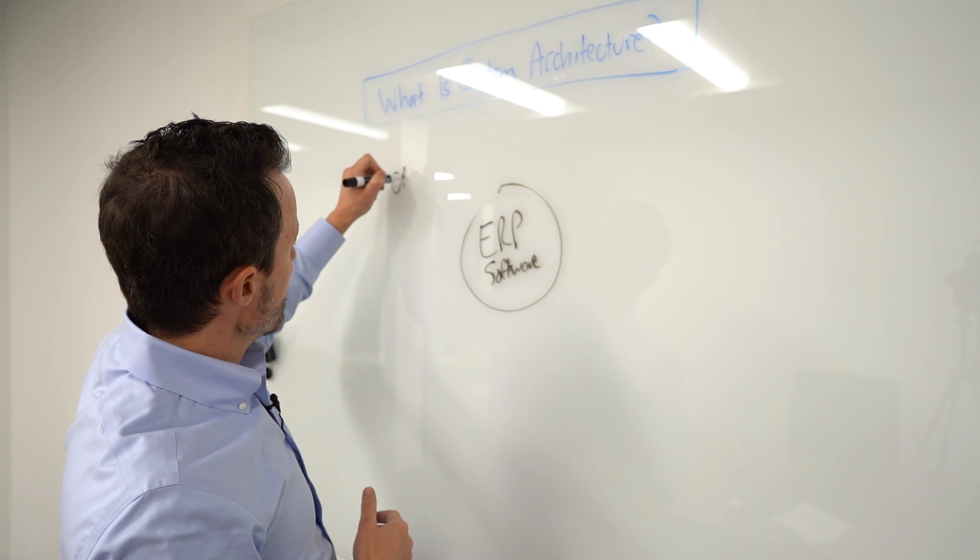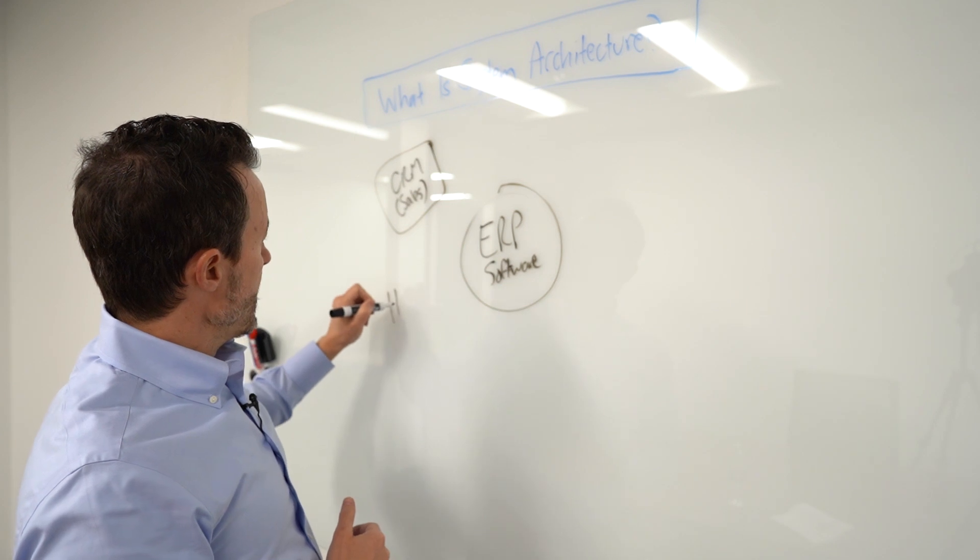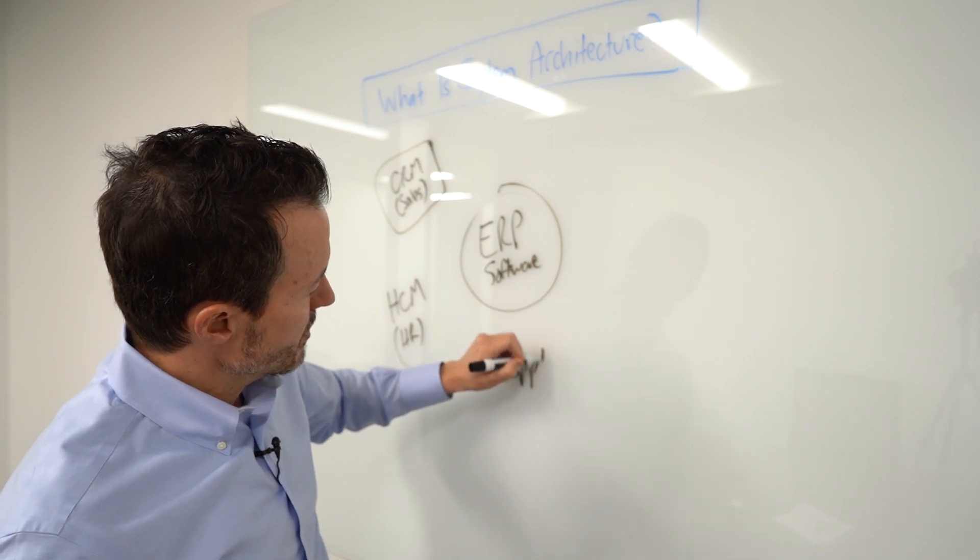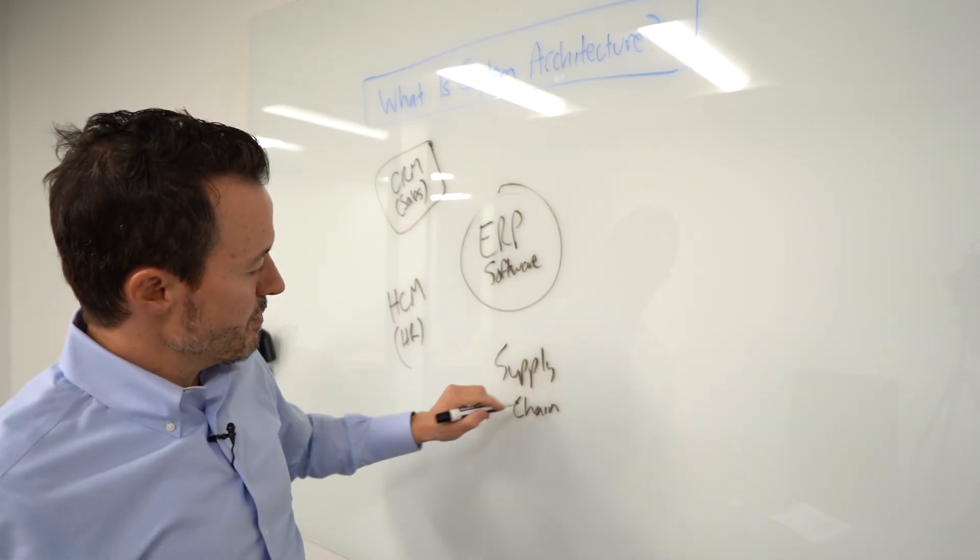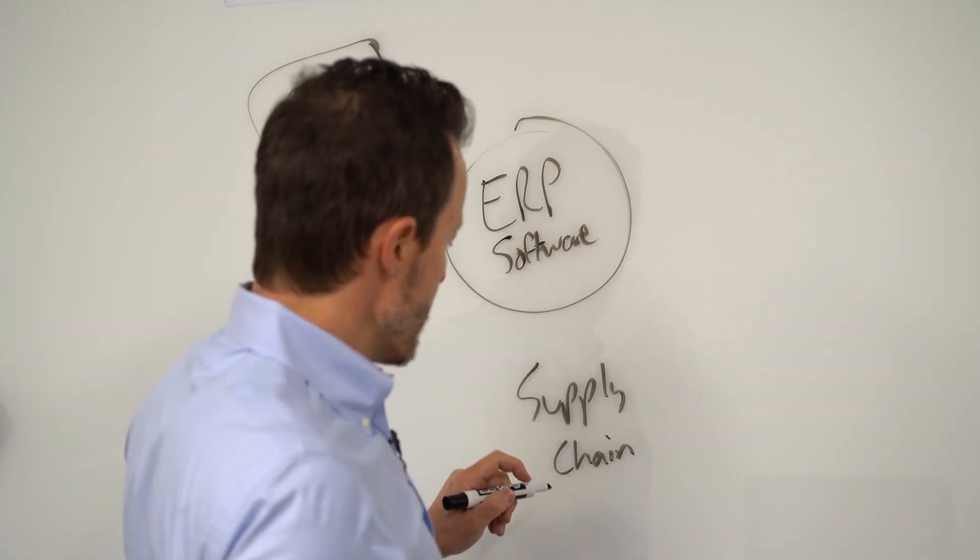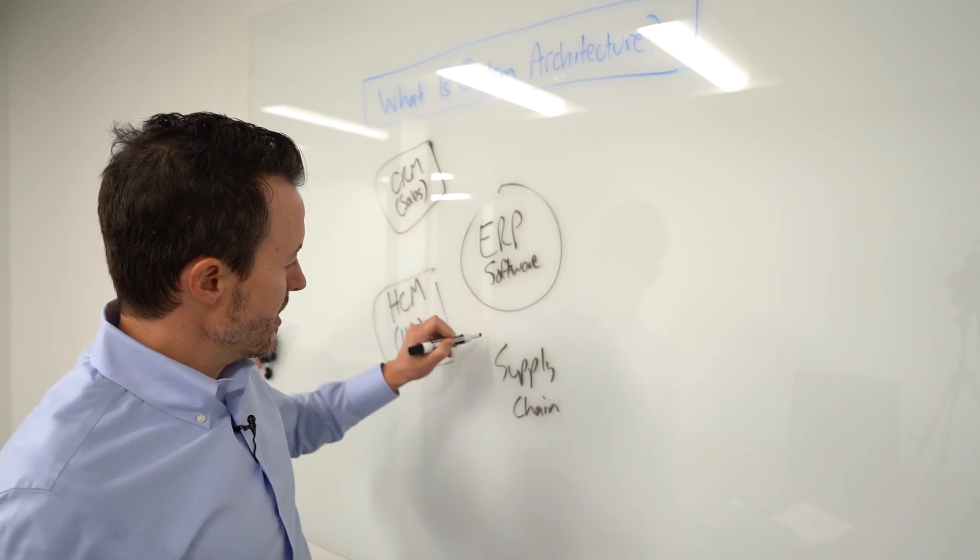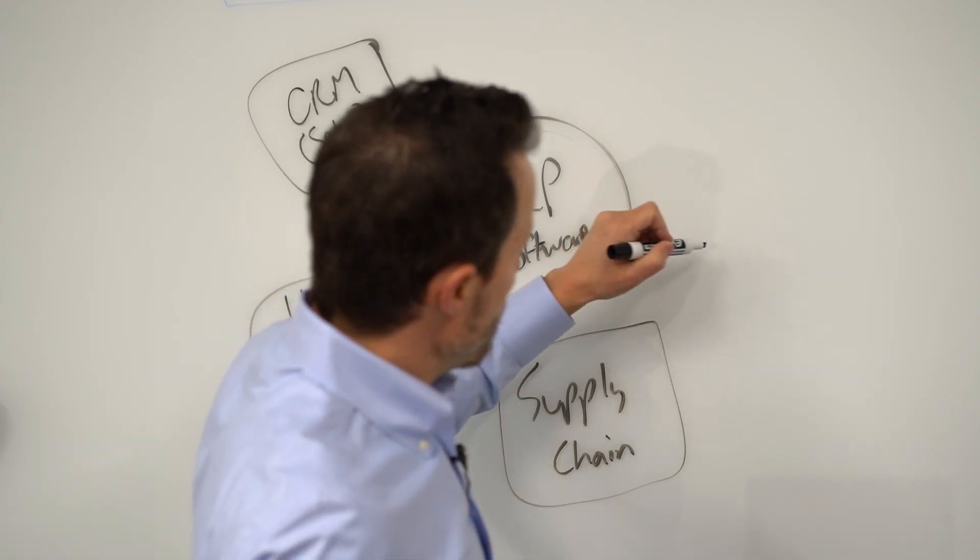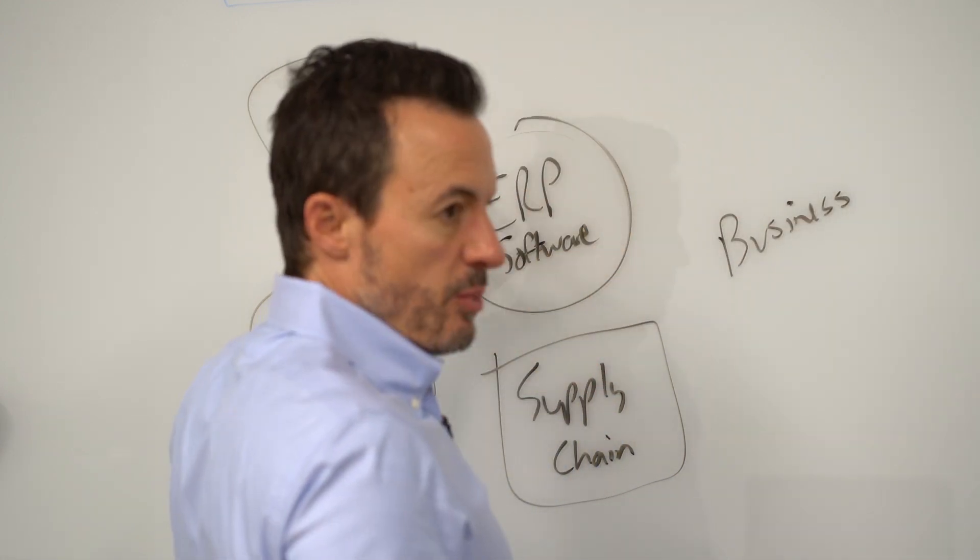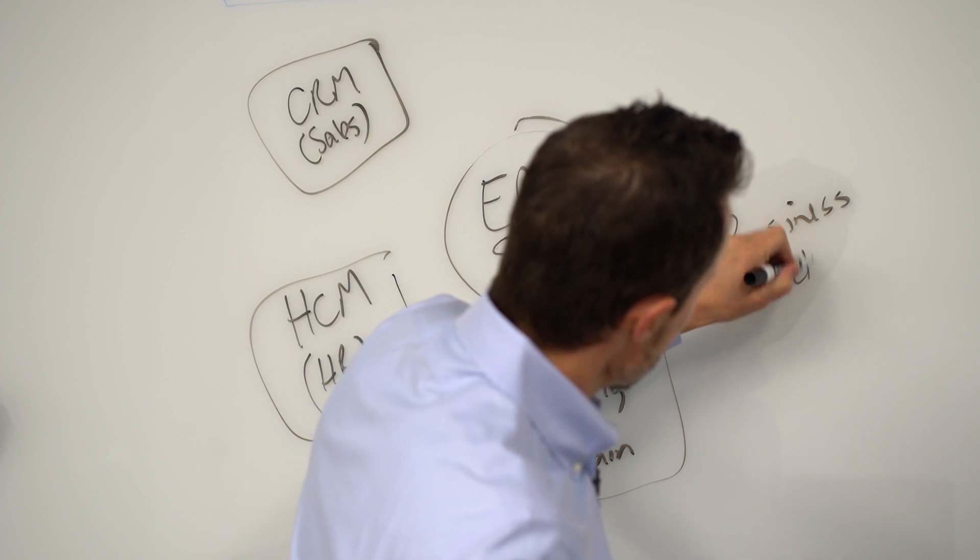Oftentimes you'll have other systems like you'll have a CRM system for sales. You'll have an HCM system and that's for your HR department. You might have supply chain software. This would be your procurement, your logistics planning. 3PL providers might integrate to your supply chain systems, your warehouse management. All those types of systems can tie into here as well. Another example would be business intelligence. Oftentimes companies find that these systems don't provide the proper analytics and reporting capabilities, so they need a third party bolt-on business intelligence system.